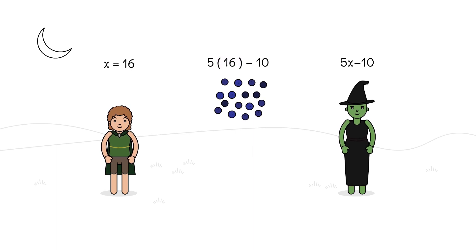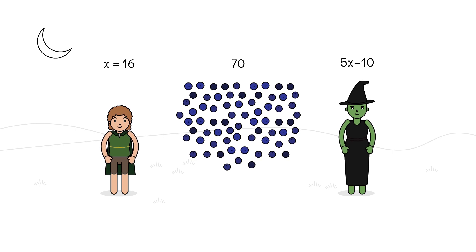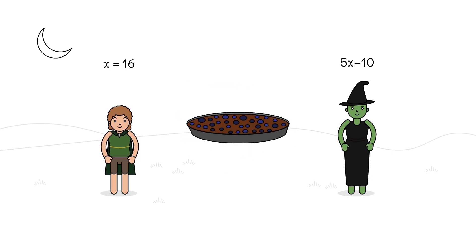The expression returns him 70 blueberries as he had hoped. He makes a giant blueberry tart and shares it with the wizard.